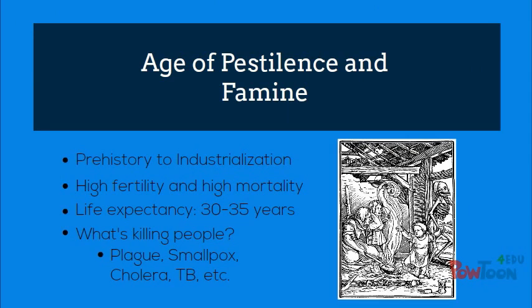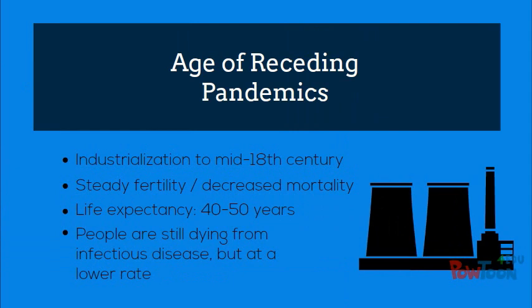The age of pestilence and famine marks the period of human existence prior to industrialization in the mid-18th century. This age is characterized as a time of high fertility and high mortality. The average life expectancy was around 30 to 35 years of age. People living during this period died of infectious diseases, such as plague and smallpox, due to the high population densities in urban landscapes.